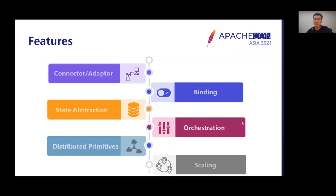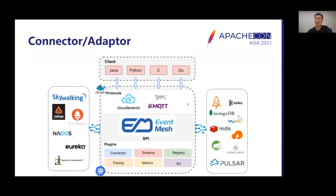The main features of EventMesh include: connector and adapter for in-binding and out-binding, state stabilization, orchestration, infrastructure, distributed primitives, safety, and scaling. EventMesh uses SPI as the basic specification to define scalable interfaces. Developers are free to use third-party plug-ins to develop their own applications. Currently, RocketMQ is available as the event store platform, with Kafka, Redis, and other platforms coming to EventMesh very soon.